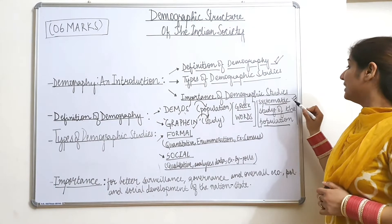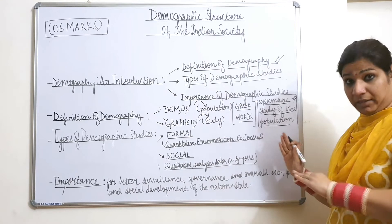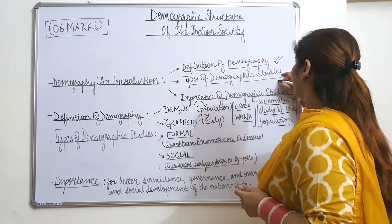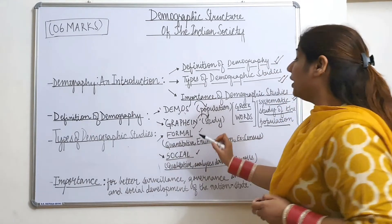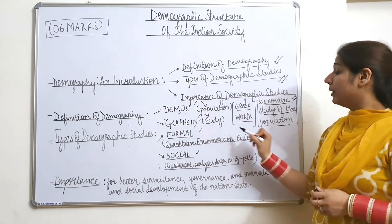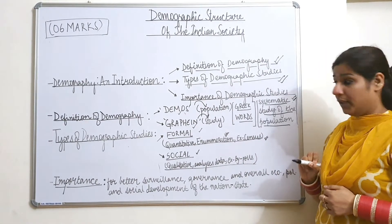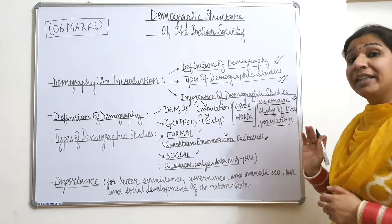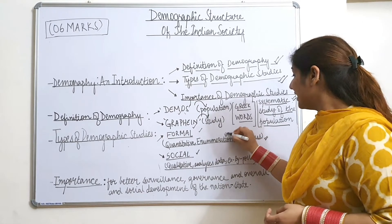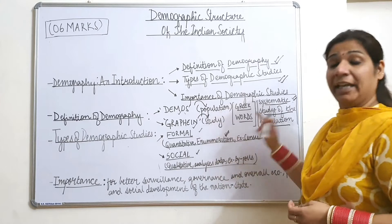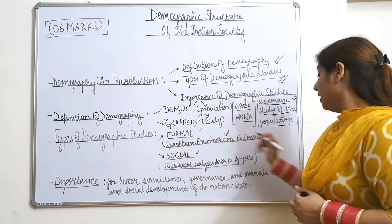Demography is the systematic study of the population — studied in a well-defined, systematic manner. The next topic is types of demographic studies. There are two types: formal and social. Formal demography is quantitative in nature; the work is largely of enumeration. A classical example is the census.